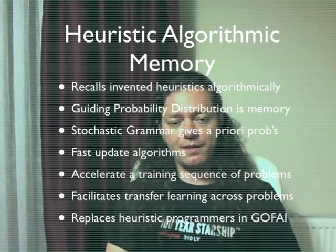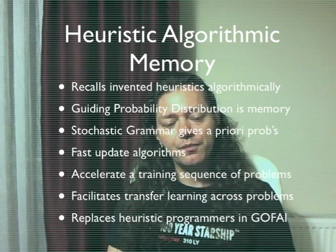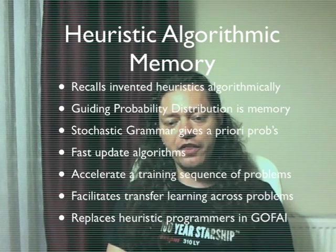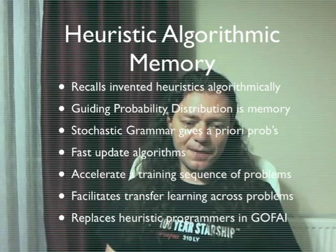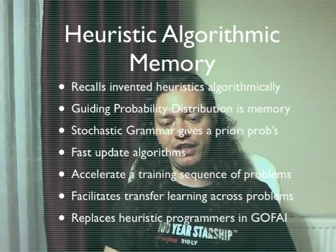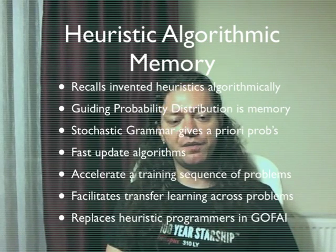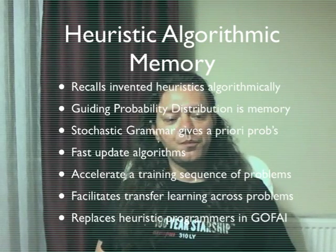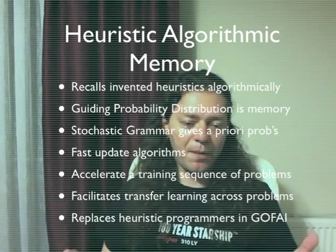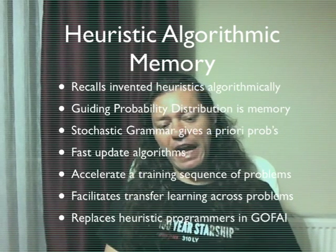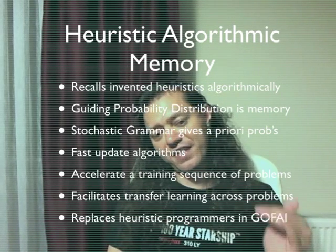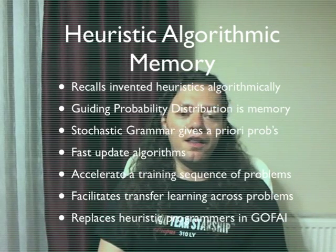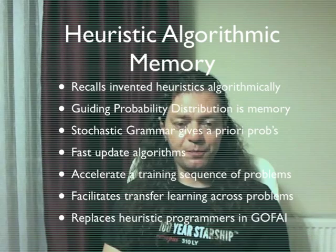Let me introduce the Heuristic Algorithmic Memory concept. Induction programs invent heuristic solutions. The HAM system recalls these heuristic solutions as programs algorithmically. In this system, the guiding probability distribution of programs is memory. In our particular implementation, the stochastic grammar gives us the a priori probabilities, and the test-update algorithms update the grammar. HAM accelerates the training sequence of problems — it trains faster than when problems are trained individually and separately. The system facilitates transfer learning across problems, which we can quantify, and we think it will eventually replace heuristic programmers in good old-fashioned AI research.